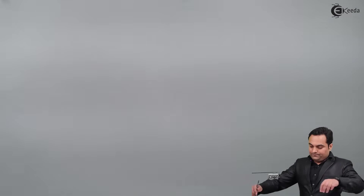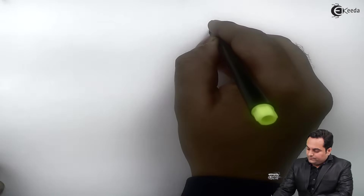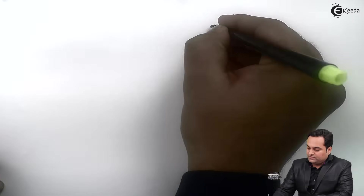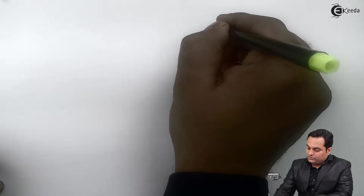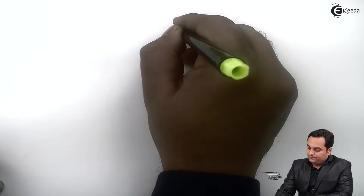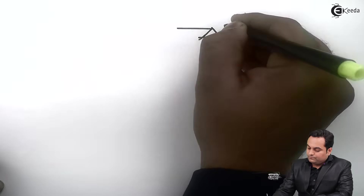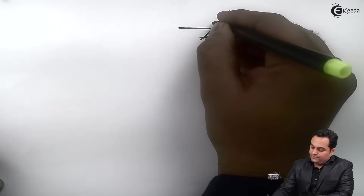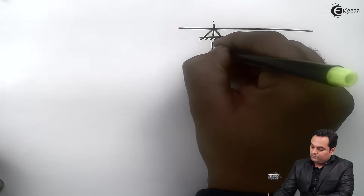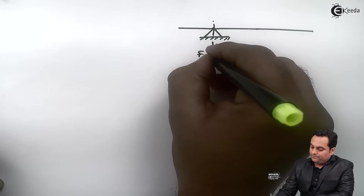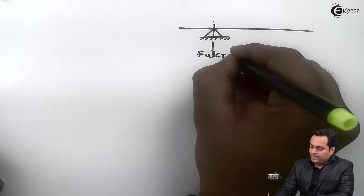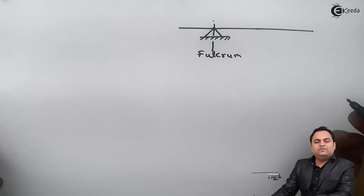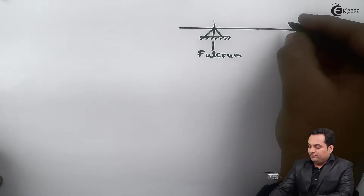Now I am drawing a diagram. This end is called the fulcrum, which is the fixed point, and this horizontal line indicates the lever.